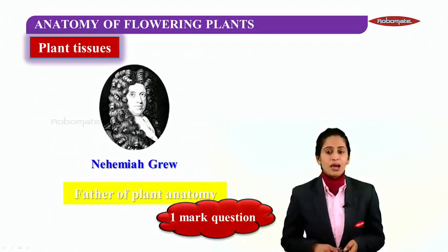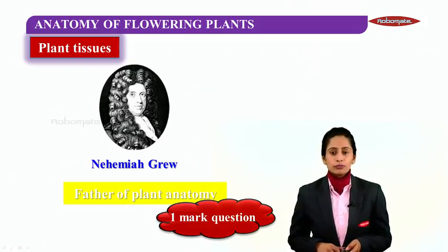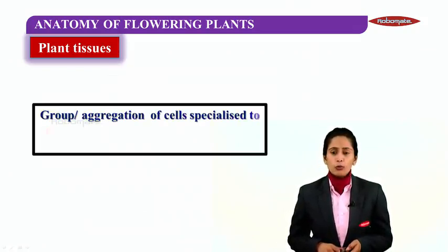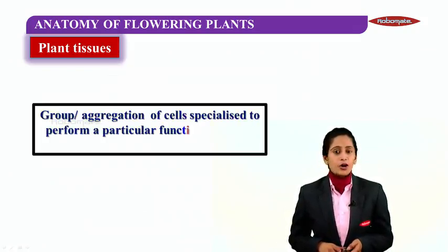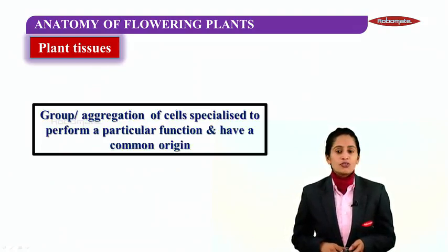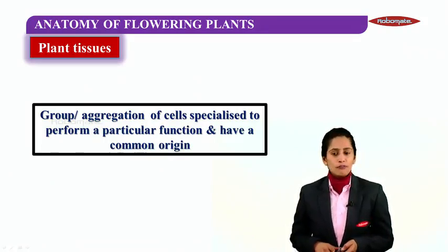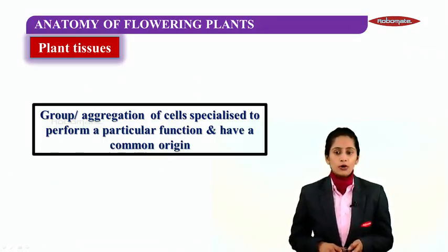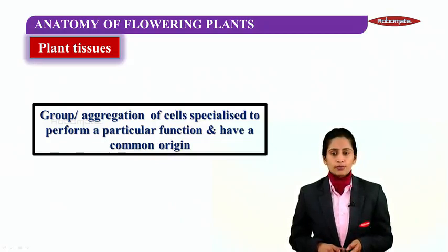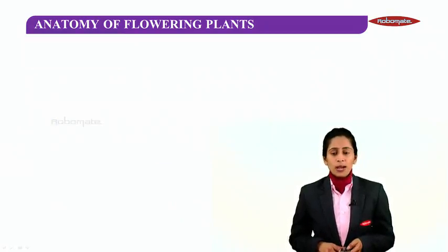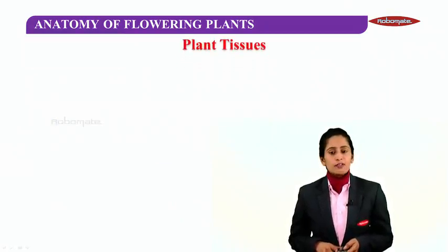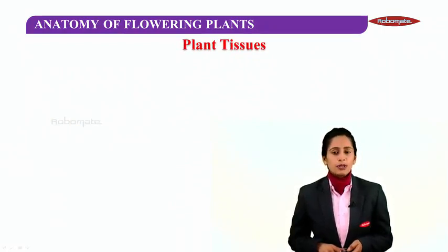Now, what are tissues? They are a group of cells, or an aggregation of cells, which perform a common function and have a common origin. Plant tissues can basically be classified into two types based upon the capacity to divide or not.